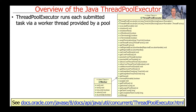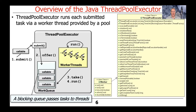ThreadPoolExecutor uses a worker thread class to do various things. When you execute or submit a task, it gets stored in something called a work queue, and that work queue is then used to feed a pool of worker threads. The work queue itself is a blocking queue, which means if the queue is full then calls to submit will block, and if the queue is empty then threads in the pool will block waiting for some work to show up that they can process.